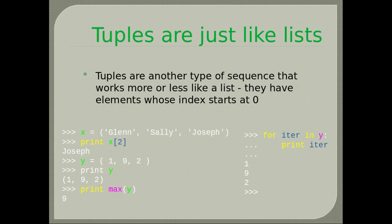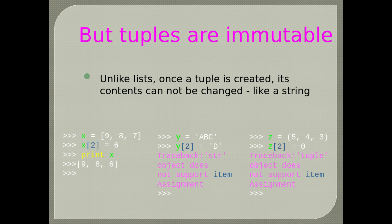Tuples: tuples are another type of sequence that works more or less like a list, with elements whose index starts at zero. The first example contains three names — print(x[2]) gives the third name. In the second example, we have a tuple of three numbers: print(y) gives the entire tuple, and max(y) returns the maximum. We can also iterate over a tuple with a for loop. But tuples are immutable — unlike lists, once a tuple is created its contents cannot be changed.